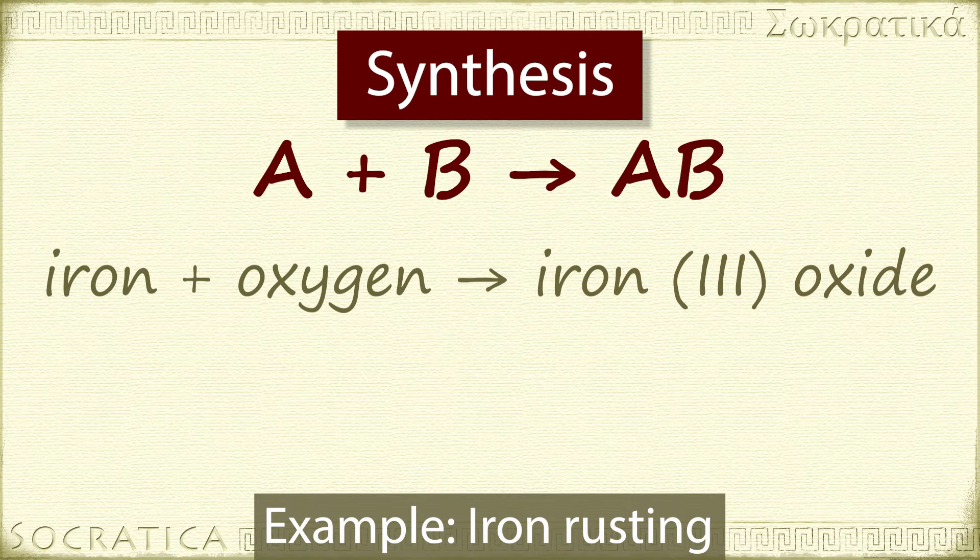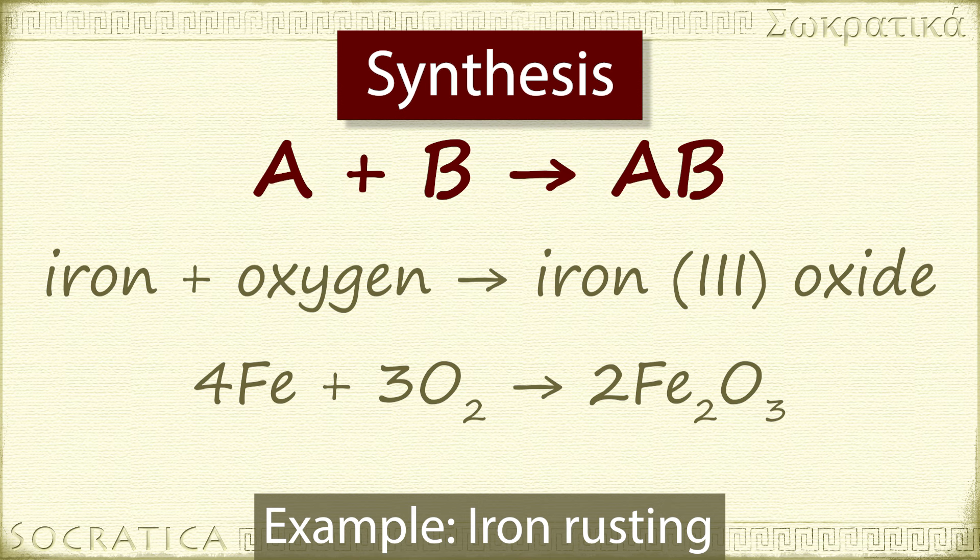Do you recognize the general form of a synthesis reaction here? Iron is A, oxygen is B, and iron 3 oxide is AB. The balanced chemical equation is 4Fe plus 3O2 yields 2Fe2O3.